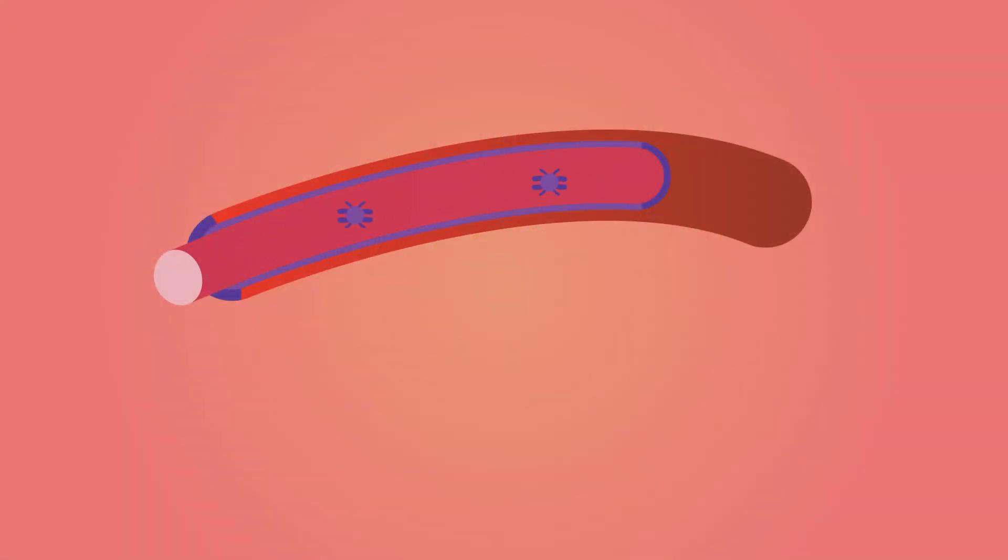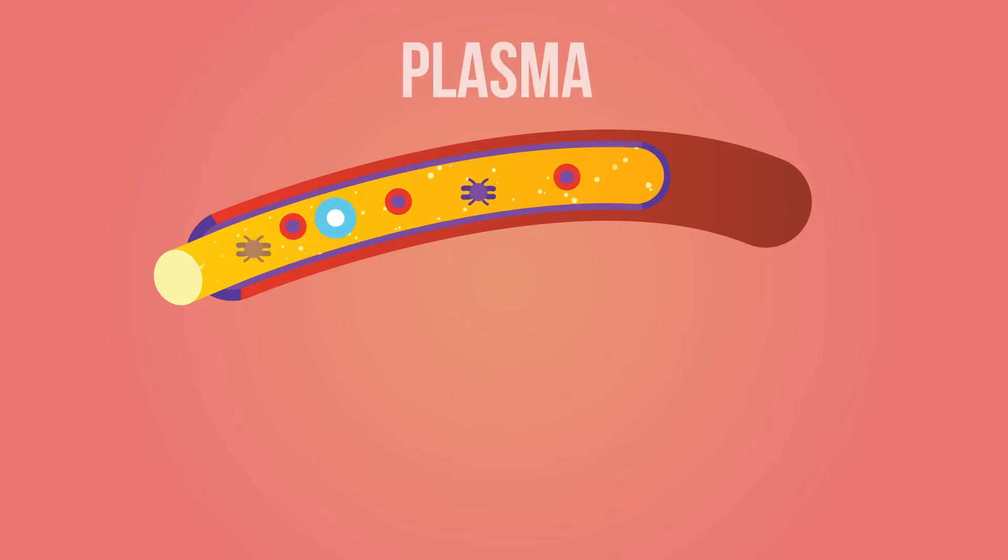The blood that you see when you cut yourself looks red because it contains millions of red blood cells. But the fluid which the blood cells are suspended in is actually yellowish or straw colored. It's called plasma.